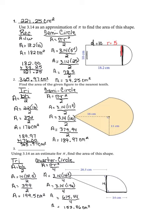To find the total area of the composite figure, I add the two numbers together: 153.86 plus 199.5. When I add these together, I get 353.36 centimeters squared.